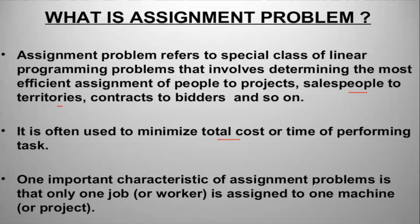One important characteristic of assignment problem is that only one job is assigned to one machine or project. In a transportation problem, different supply centers can provide to different demand centers, but here you can only assign one job to one particular person. For example, there are three students A, B, C and three assignments. I can give one assignment to only one student — if I give it to student A, I can't give it to student B.